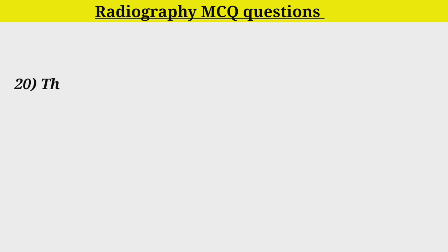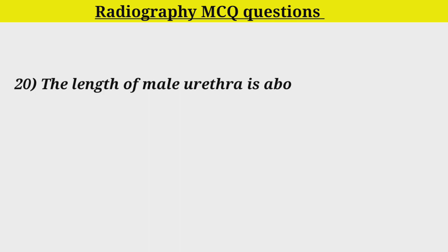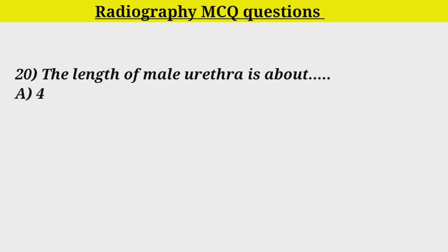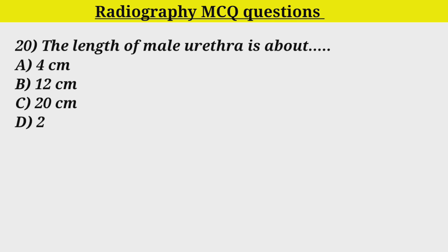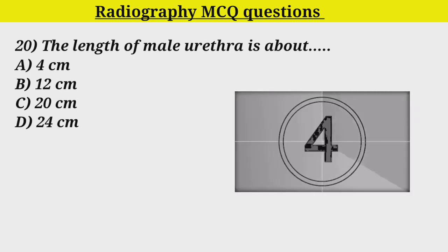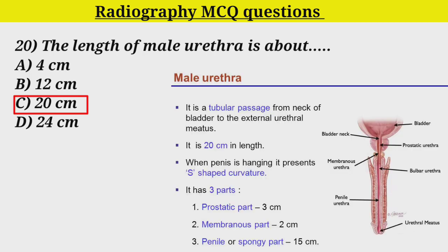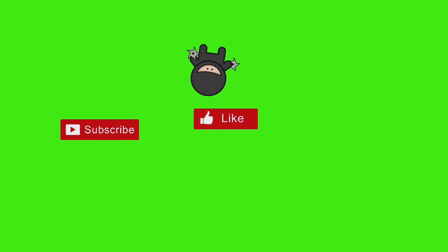Q20. The length of male urethra is about: Option A. 4 cm. Option B. 12 cm. Option C. 20 cm. Option D. 24 cm. Correct answer is Option C. 20 cm. Male urethra length is 20 cm.